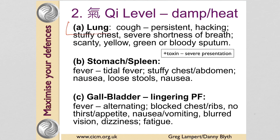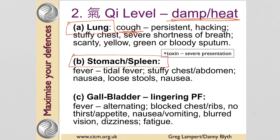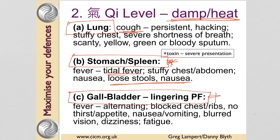We can see this in the lung with a persistent cough as a manifestation of damp-heat in the lungs. We can see it in the spleen and stomach with tidal fever and digestive symptoms, and sometimes in the Shaoyang level — the gall bladder level. I've seen quite a bit of these presentations as a lingering pathogenic factor after a moderate bout of illness.